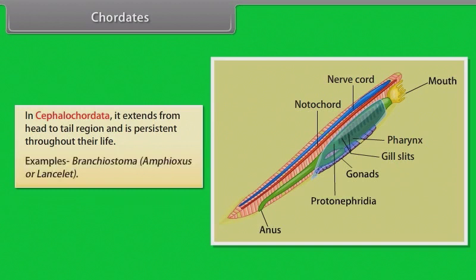Examples of Cephalochordata: Branchiostoma, Amphioxus, and Lancelet.